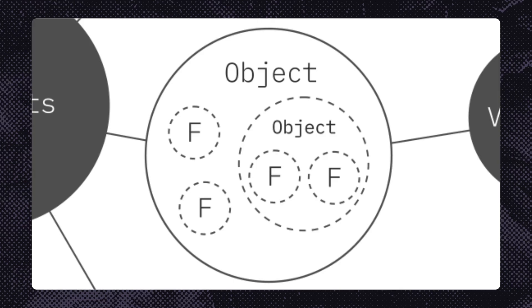Different object types define the fields or information that can be requested. So, since our object type here is a product, we could query or mutate any information related to this product.